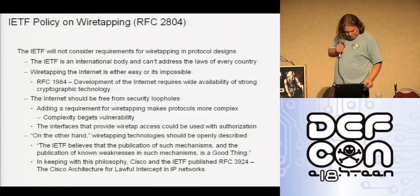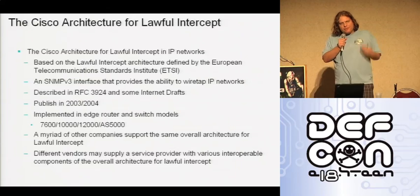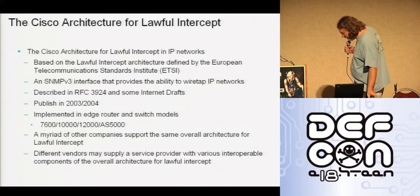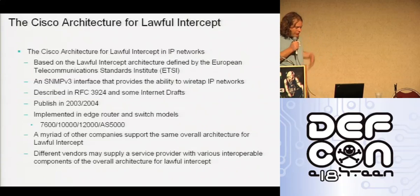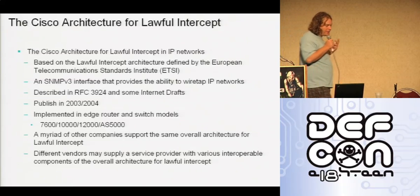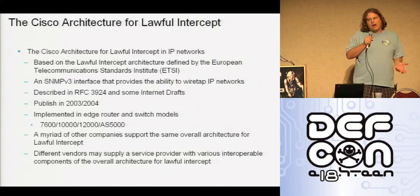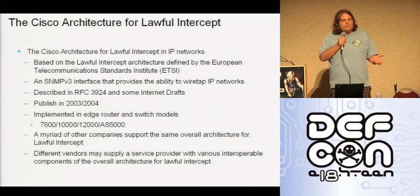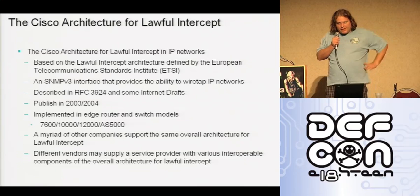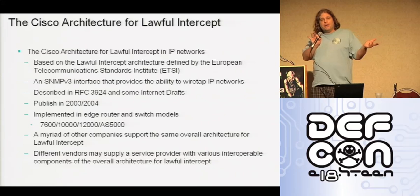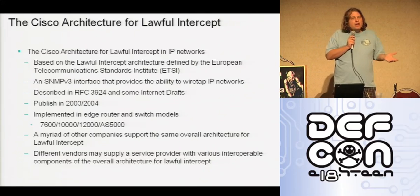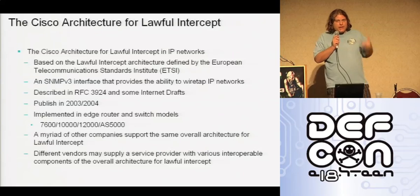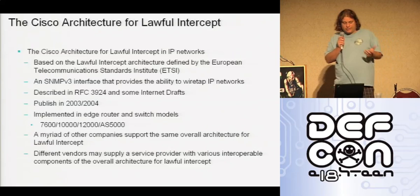In keeping with that policy, Cisco published an RFC describing the interface they built within Cisco routers for performing wiretaps. It's not an internet standard, since the IETF decided they wouldn't have those, but Cisco's architecture was published within the IESG so it's freely available in the same documentation set. Cisco had to build this because their customers demanded it and because governments of the countries their customers operate in essentially forced them to. The architecture was based on previous technical standards defined by ETSI, the European Telecommunications Standards Institute.